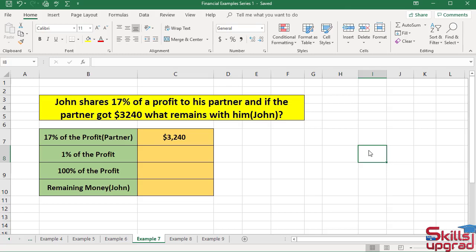In this example, I will calculate the remaining money of John. John shares 17% of a profit to his partner, and if the partner got $3240, what remains with him?